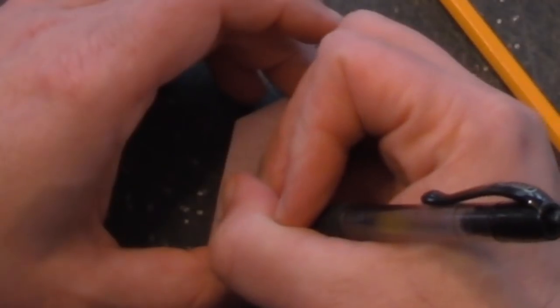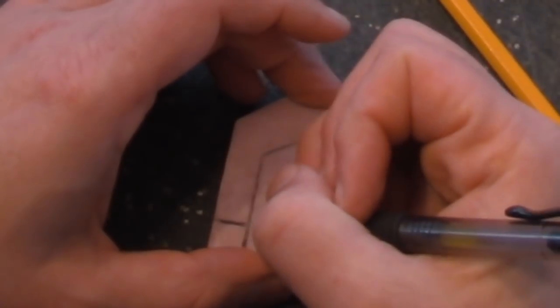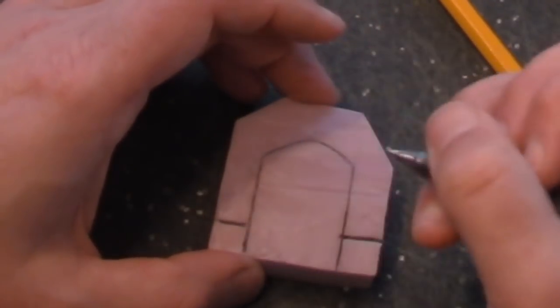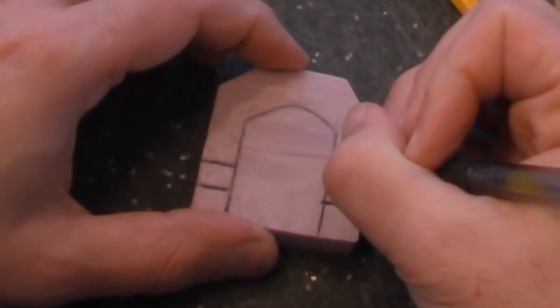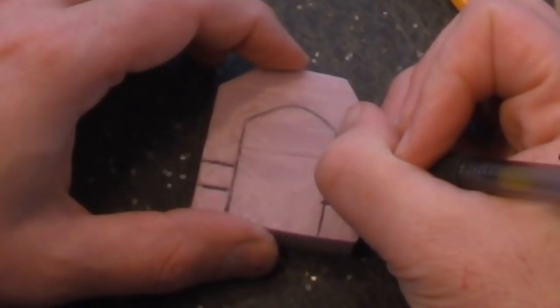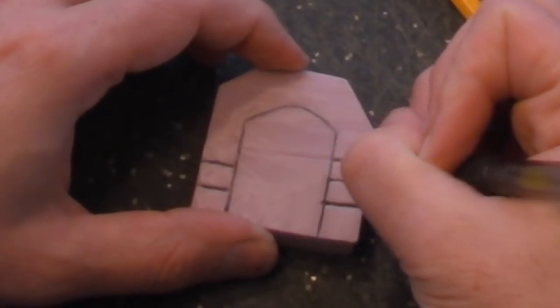Then I just draw the mortar lines right in, gouging them out with my pen. I'm just eyeballing it. The important thing is to mirror both sides as best you can. My rule of thumb is I draw four stone blocks before the arch starts to curve.